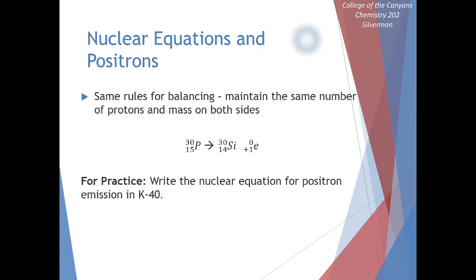A practice problem here, we write the nuclear equation for positron emission in potassium-40. We can start with potassium-40. We know that we're going to emit a positron. You can write this as e or as beta. Either is okay. Mass number is zero, and the charge number is plus one for that positron. Based on this, we know what our daughter nuclide has to look like. It has to be this. The mass number is still 40, and now the atomic number is 18. This corresponds to argon. Our potassium is converted into argon by undergoing this positron emission.